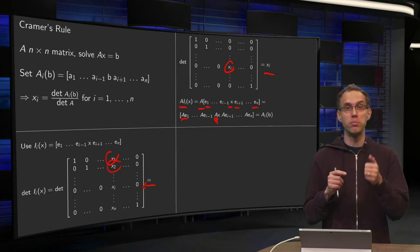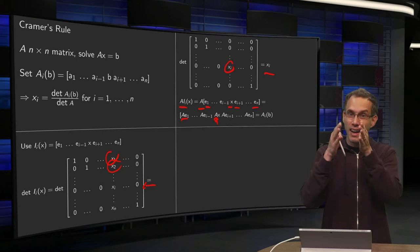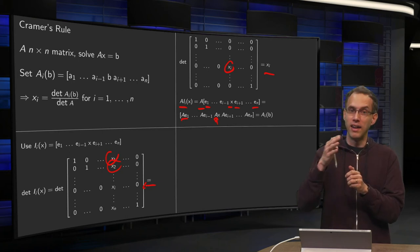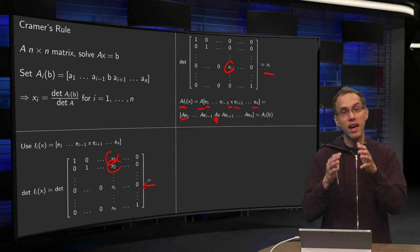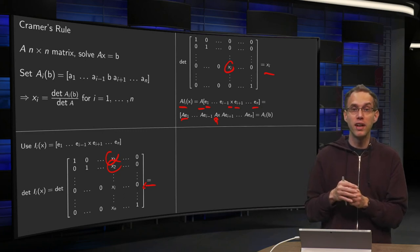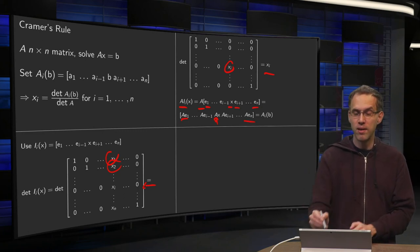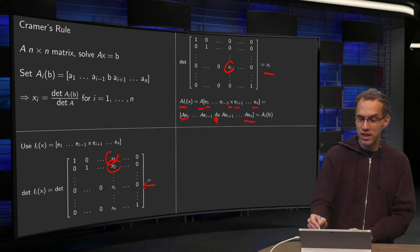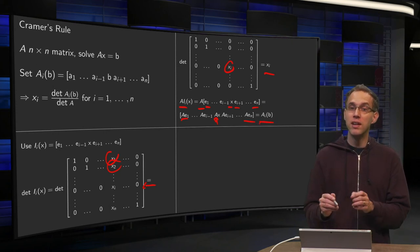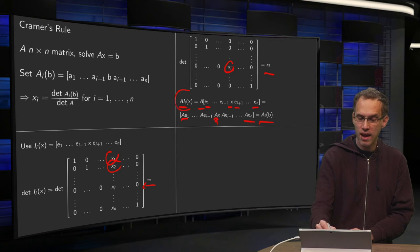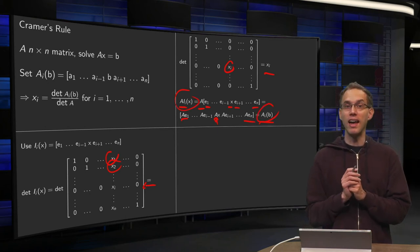So what do you get? A matrix with columns a_1, a_2, and an ith column is b, and then we get a_i plus 1, etc., up to a_n. So what you get is exactly your matrix A_i(b). So our product A times I_i(x) gives us exactly our A_i(b).